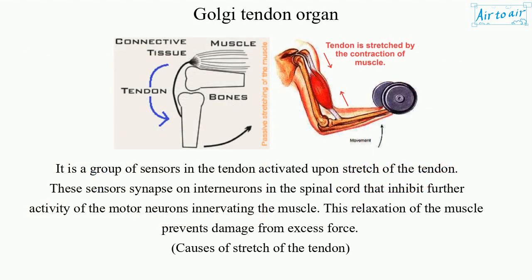It is a group of sensors in the tendon activated upon stretch of the tendon. These sensors synapse on interneurons in the spinal cord that inhibit further activity of the motor neurons innervating the muscle. This relaxation of the muscle prevents damage from excess force.